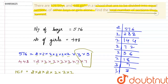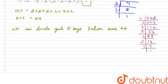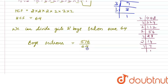We have to find the total number of sections formed. The number of boys' sections = 576 ÷ 64. Computing: 576 ÷ 64 = 9. Therefore, the number of boys' sections is 9.